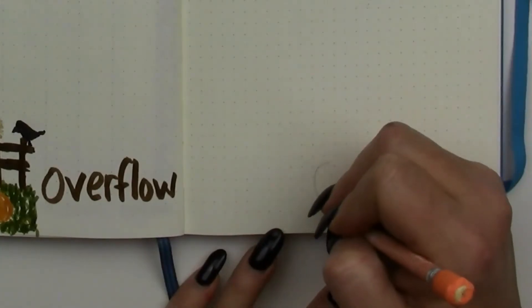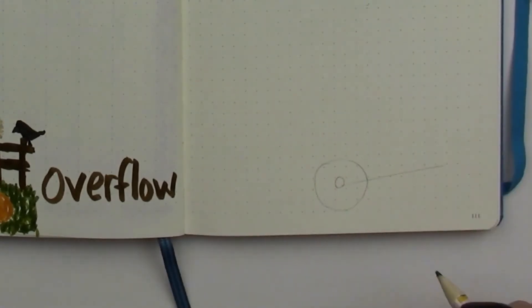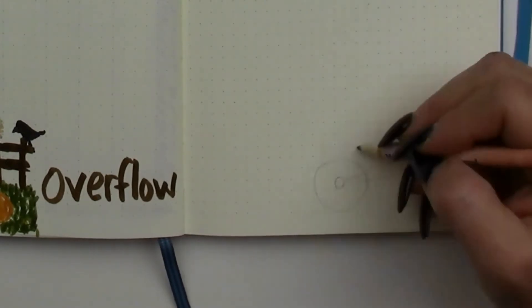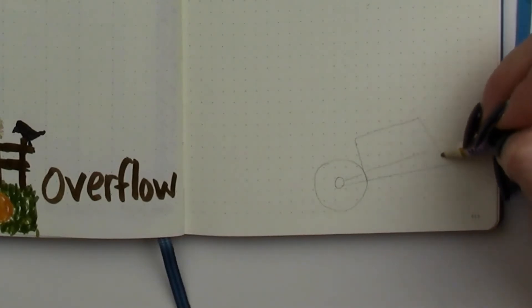And then to go with our little scarecrow, I thought over here, maybe a wheelbarrow with some fruits and veggies in it. And this was super easy to draw.